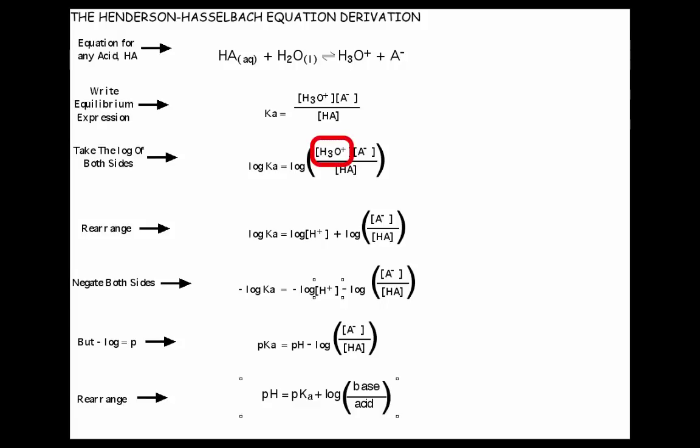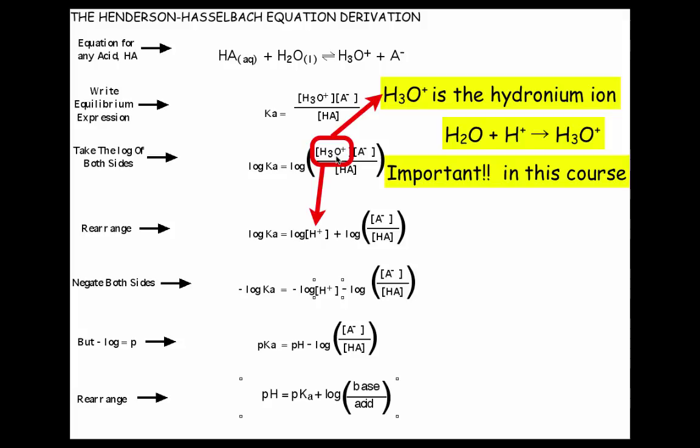H3O+ is called the hydronium ion. When an acid ionizes in water, the H+ and the water combine to make the hydronium ion. So this is a one-to-one ratio. So in this course, we're going to treat the H3O+ and the H+ the same. So if they mean the same thing in this equation, I'm changing the H3O+ to H+, and then I'm going to continue on with the derivation.